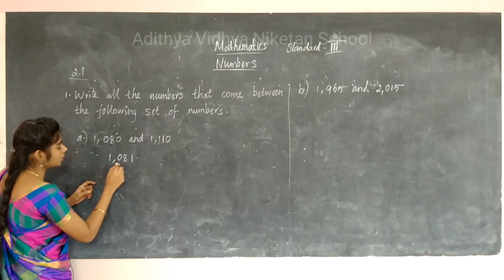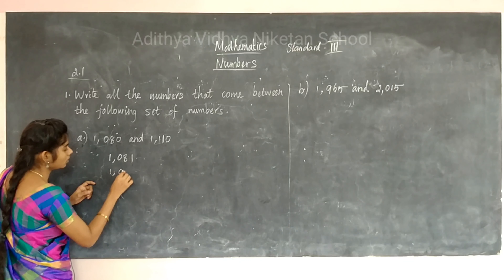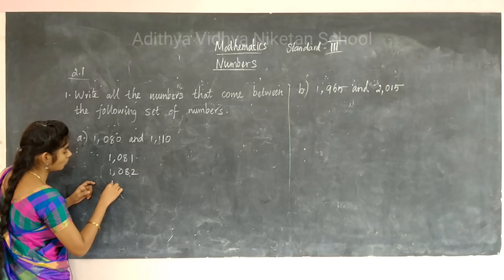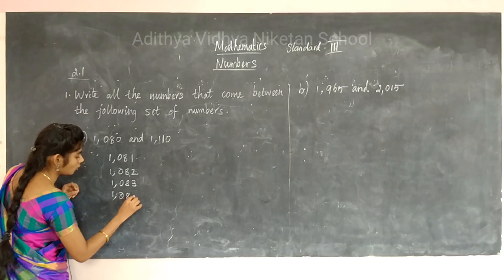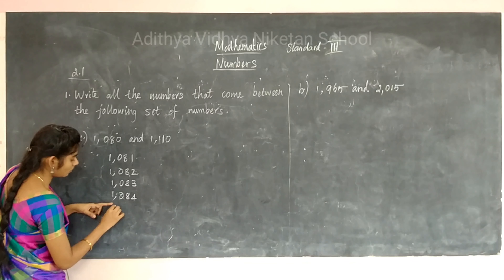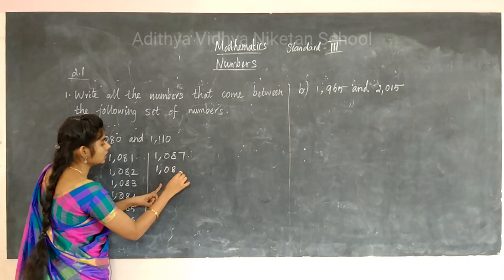The next number after 1081 is 1082. Then 1083. You just add 1 each time. Likewise, 1084, then 1085, then 1086. What is the number next to 1086? It is 1087. Then 1088.